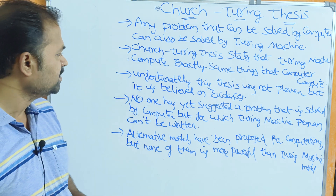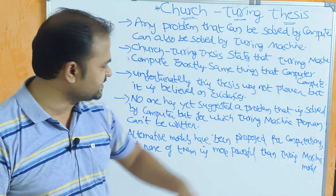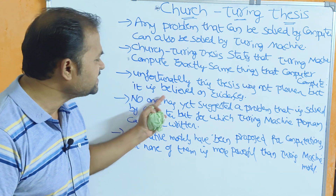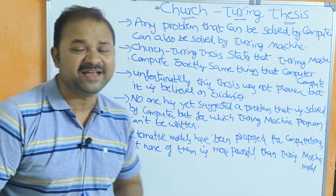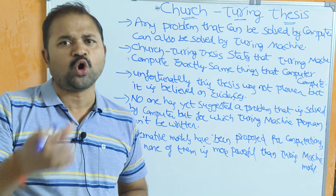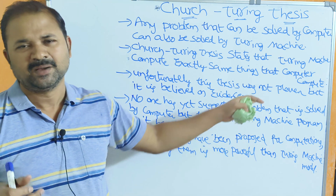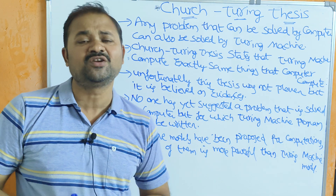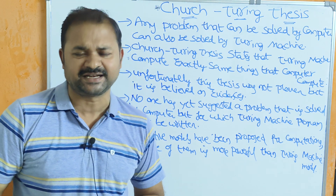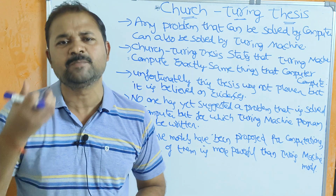Unfortunately, the Church-Turing thesis has not been proven, but it is believed based on some evidences. There is no formal theorem or proof for the Church-Turing thesis. It is not proven, but based on those evidences we can say the thesis is correct, though it has not been practically proved.